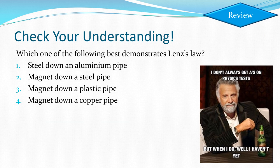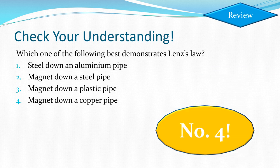Let's check our understanding. Which of the following demonstrates Lenz's Law? Remember the scenario from the start — running a magnet down a pipe that isn't magnetic. It can't be a scenario with no magnet involved — we need a magnet moving within some sort of loop of wire. The pipe represents one big long wire. Running it down a steel pipe won't work because the magnet sticks; a plastic pipe has no free electrons. So we want to run it down a copper pipe.